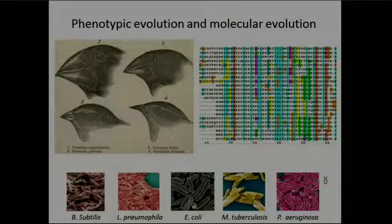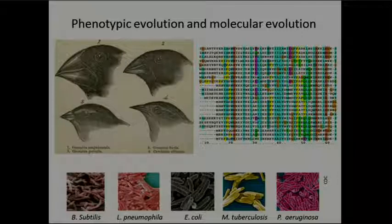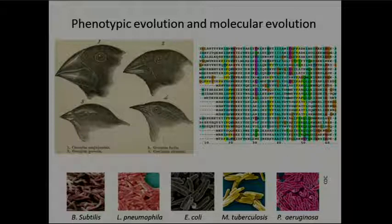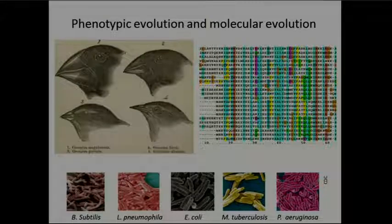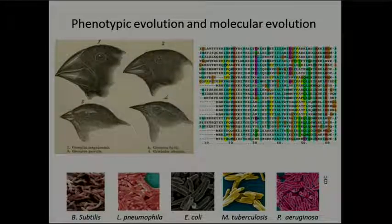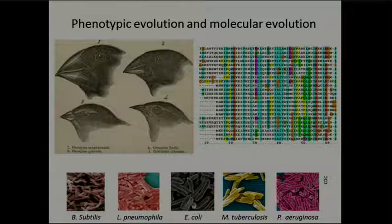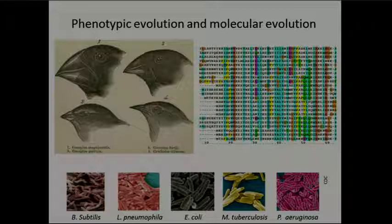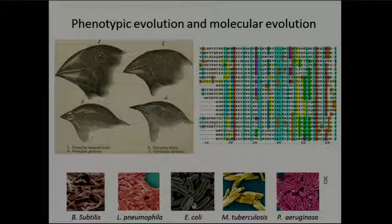Here I'm showing five different bacterial species that live in different environments — some in soil, some in the gut, some cause diseases — but if you look at them under a microscope they look very similar to one another. This tells us that many of the relevant phenotypes for bacteria are not morphological but physiological or biochemical. For example, what types of nutrients can a bacterium extract from the environment to grow? Every bacterium needs to compete where it lives in order to persist. So I'm going to compare these biochemical phenotypes across different bacteria.